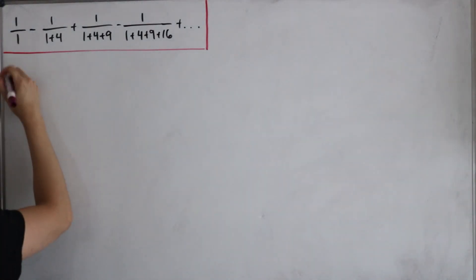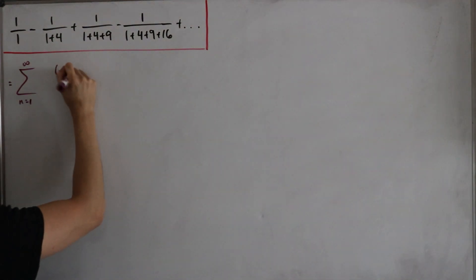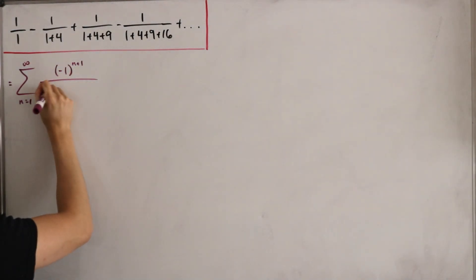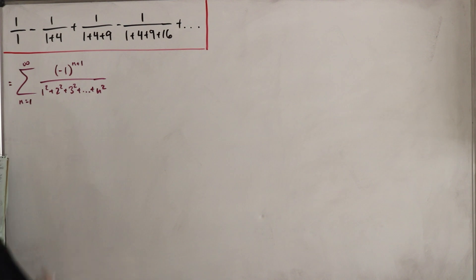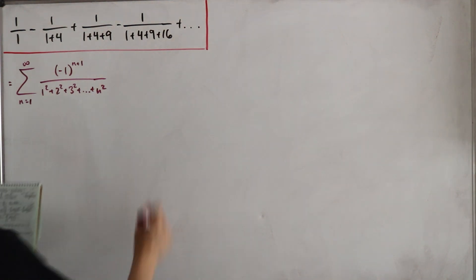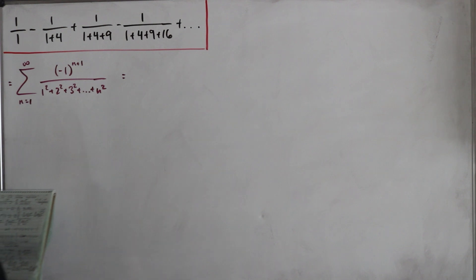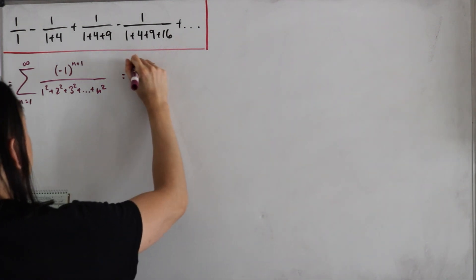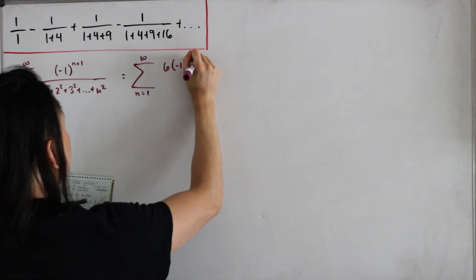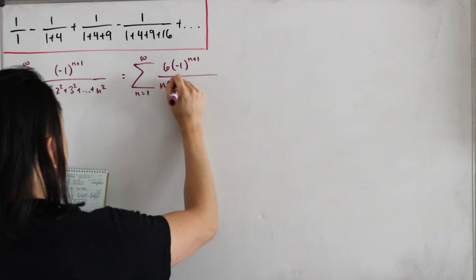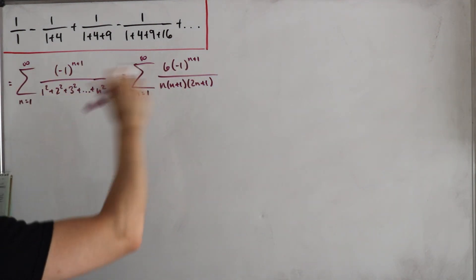The summation we're working with is the infinite sum from n=1 to infinity of (-1)^(n+1) times n, divided by 1² + 2² + 3² + ... + n². The denominator has a nice closed form: n(n+1)(2n+1)/6. Taking the reciprocal, we can rewrite the sum as six times (-1)^(n+1) times n, all divided by n(n+1)(2n+1).